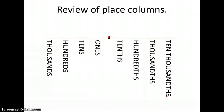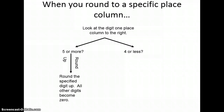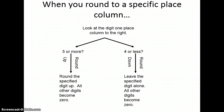You'll be asked to round to specific place values in this lesson. When we round to a specific place column, we look at the digit one place to the right of that column. I ask myself: is it five or more, or is it four or less? If it's five or more, I round up — I round the specified digit up and all digits after that become zeros, and I don't have to write them if they're all zeros at the end. If it's four or less, I round down — I leave the specified digit alone and everything after it becomes zeros.